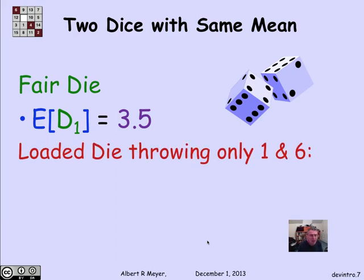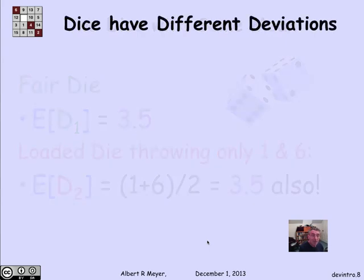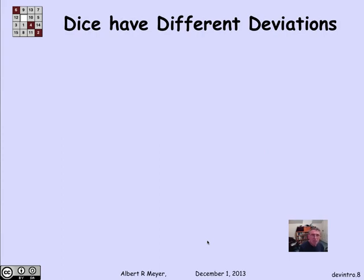Now, suppose I look at a loaded die, die 2, which only throws a 1 or a 6, but with equal probability. Then its expectation is also 3 and 1/2 by the same reasoning. So here are these two different dice. One takes the values 1 through 6 equally likely, and the other takes only the two values 1 and 6, but they have the same expectation.